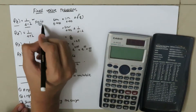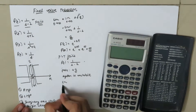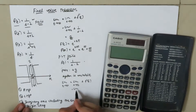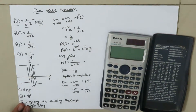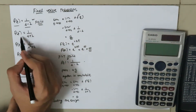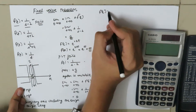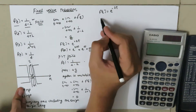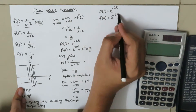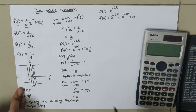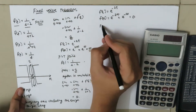Now taking the second transfer function, the final value theorem gives: limit as t tends to infinity equals limit as s tends to 0 of s times 1 over (s plus 2), which equals 0. Taking the inverse Laplace transform directly gives f(t) equal to e to the power negative 2t. At infinity, this becomes e to the power negative infinity, which equals 0. So the final value theorem works here.